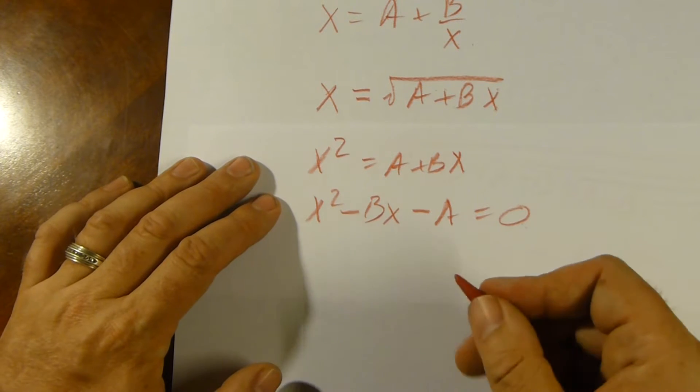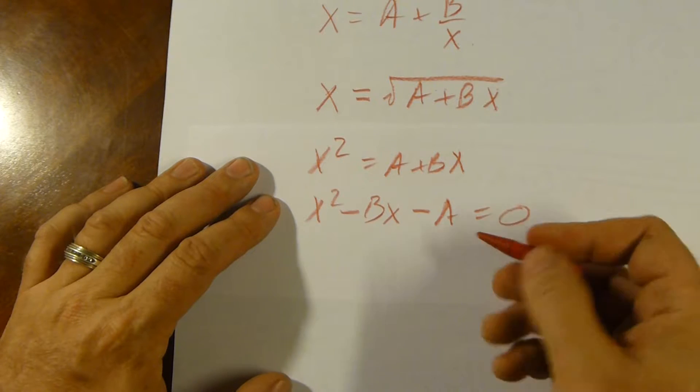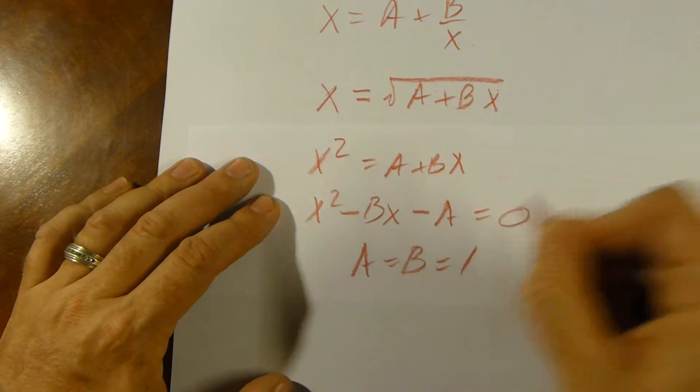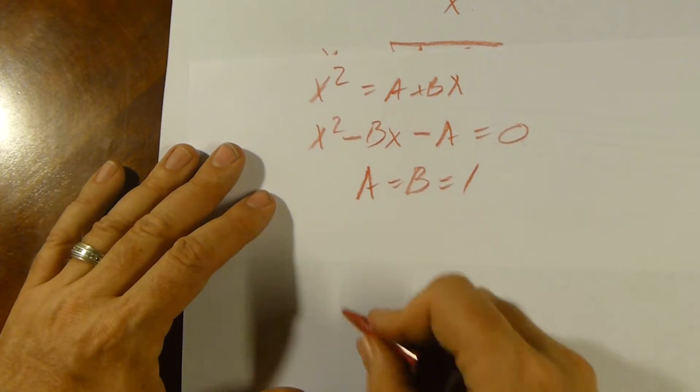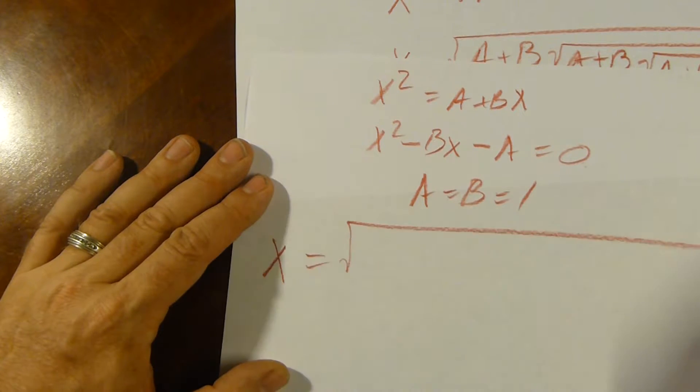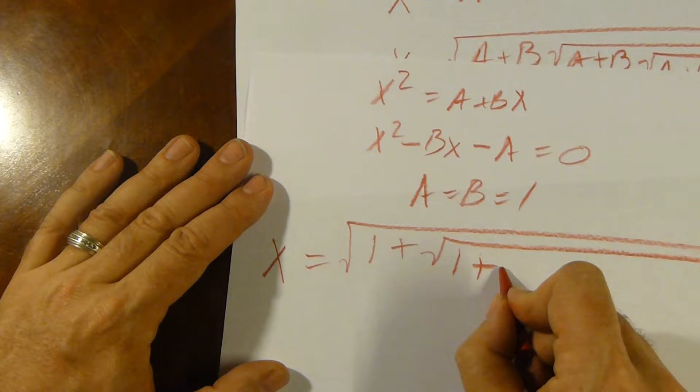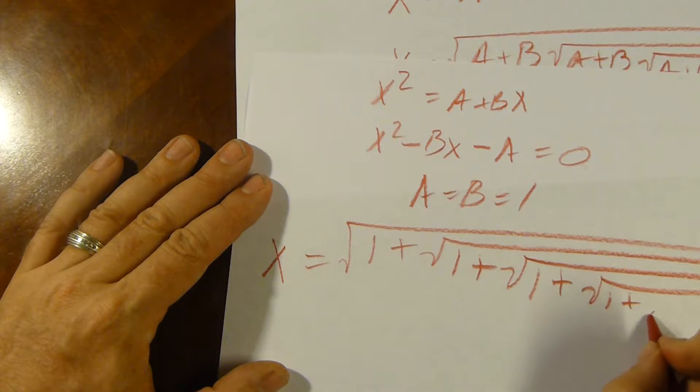Now, what can we actually get from this? Does this actually work? Okay, what if we just let a equal b equal 1? Well, in that case, we get x equals the square root of 1 plus square root of 1 plus square root of 1 plus and so forth.